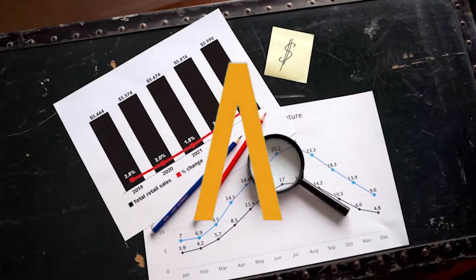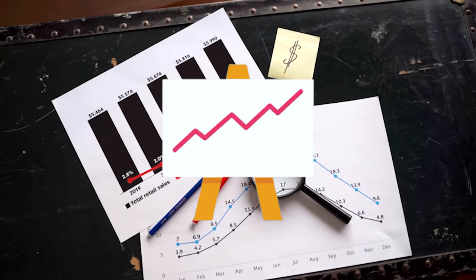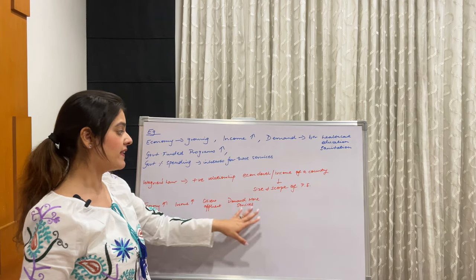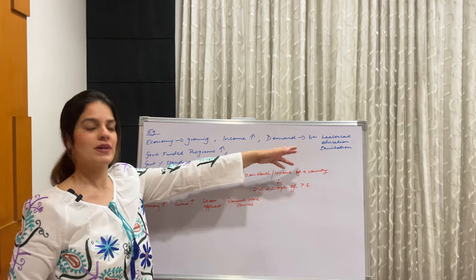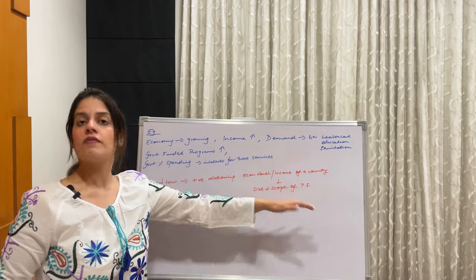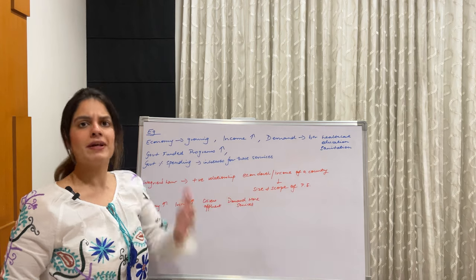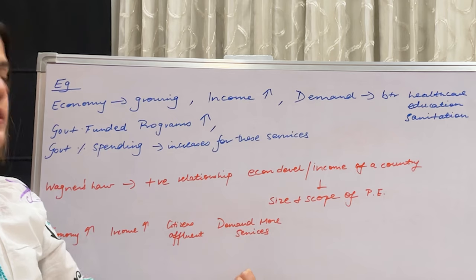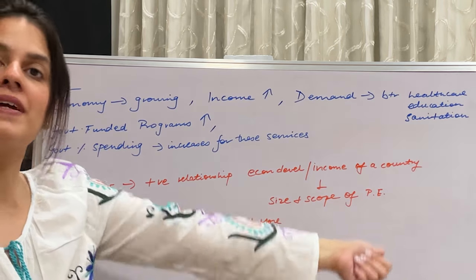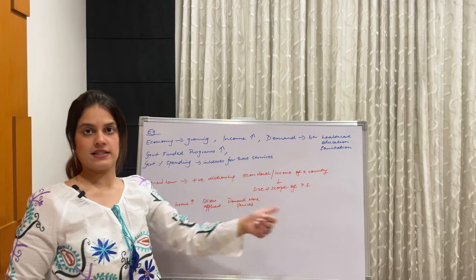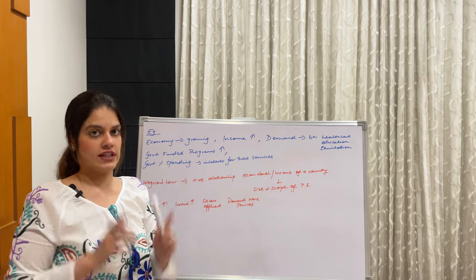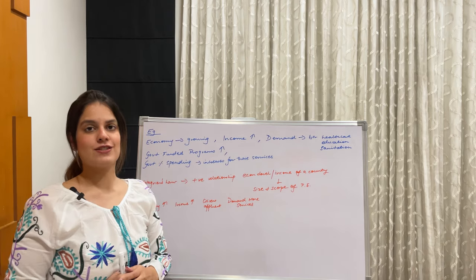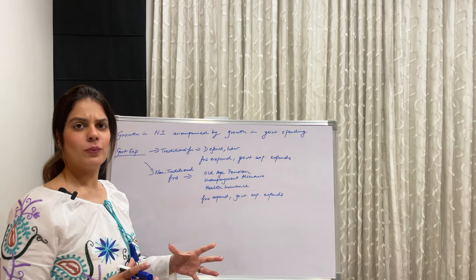This shows a positive relationship between economic growth and public expenditure. As the economy grows and income rises, citizens become more affluent and demand more services from the government. The size and scope of public expenditure is totally dependent on income — as both rise together, we see a positive relationship between the two.